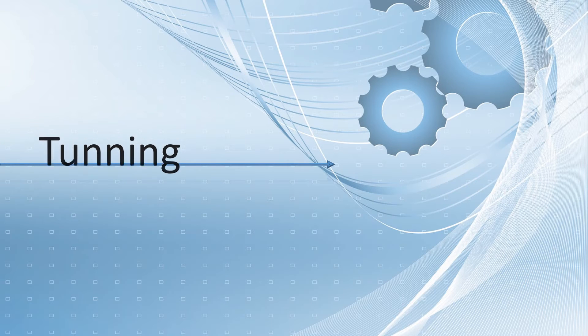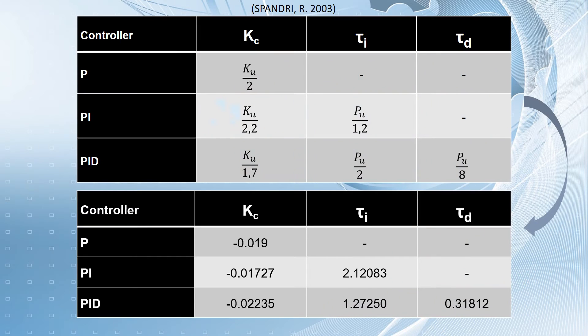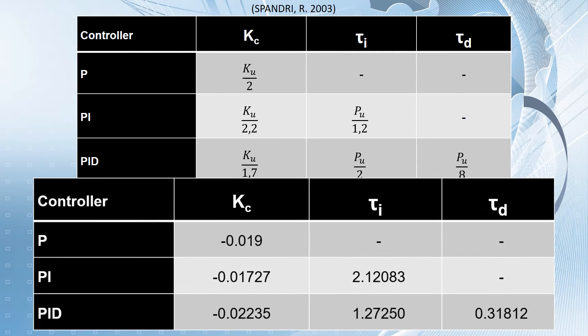Tuning: The PID controller, tuned by the second method of Ziegler-Nickel's rules, gives the following. The display table shows the formulas to obtain the parameters of the P, PI and PID controllers. And these are the results obtained during the tuning process for closed loop.